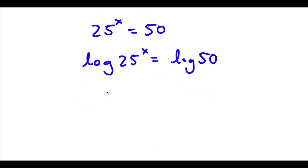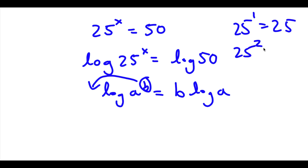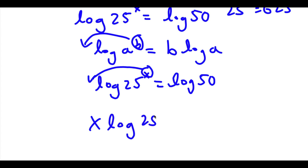Now an important property of logarithms is that if I have something in the form log a to the power of b, I can actually move this exponent b to the front of the logarithm. We're trying to solve for the value of x, and x is going to be a decimal because 25 to the power of 1 is 25, and 25 to the power of 2 is 625, so x is between 1 and 2. By using this property, I can move exponent x to the front. So now I have x times log 25 is equal to log 50.